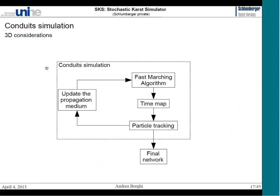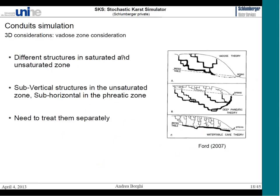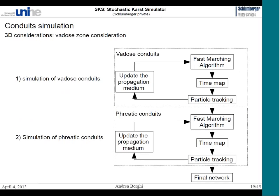In 3D, you cannot directly simulate the unsaturated and saturated zones together, because they are quite different in mature karst. In the unsaturated zone, conduits are more vertical or sub-vertical because flow is driven by gravity. In the phreatic zone — below the water table — conduits are more sub-horizontal, controlled by the spring level, connecting collectors from the vadose zone toward the spring. We treat them separately: first simulating all vadose conduits, then in a second step simulating the phreatic conduits, giving us the final network.